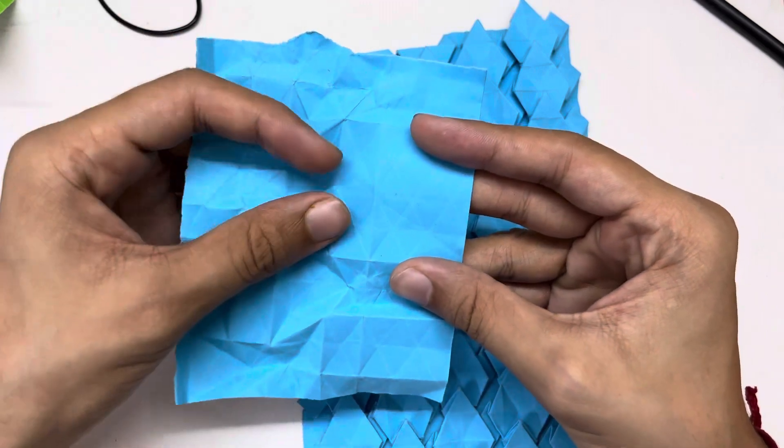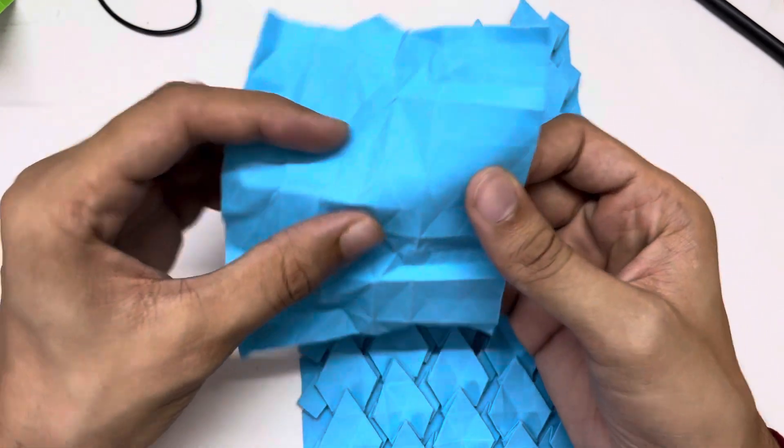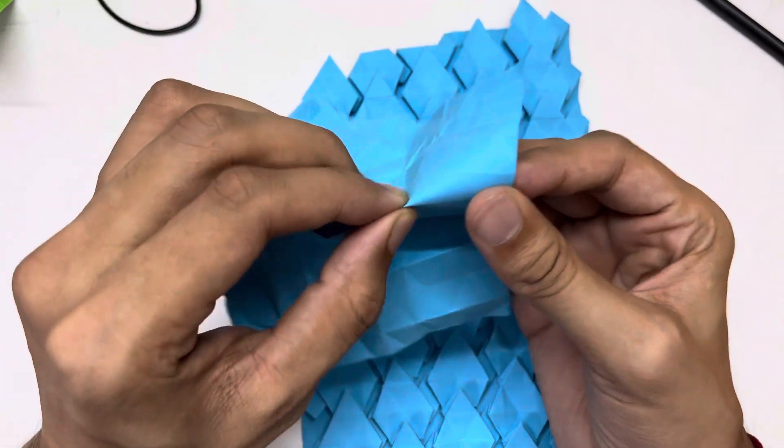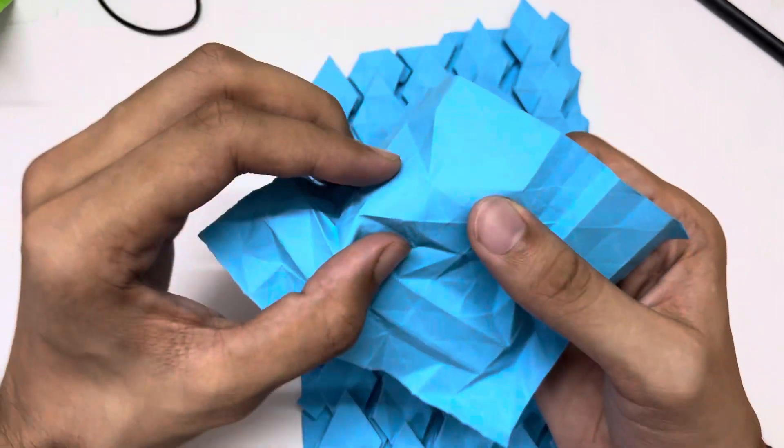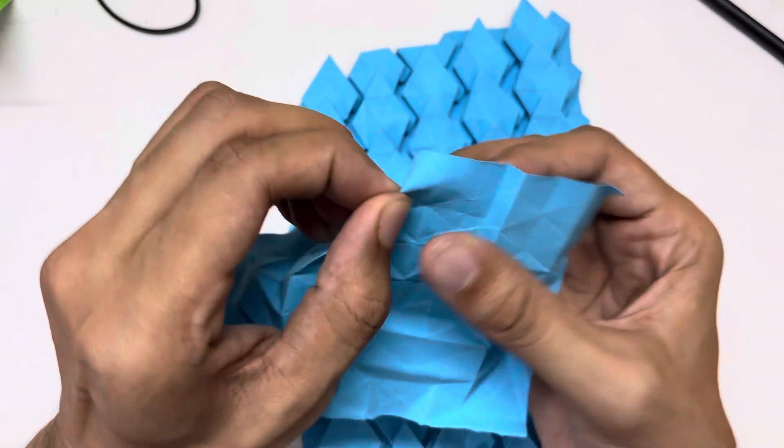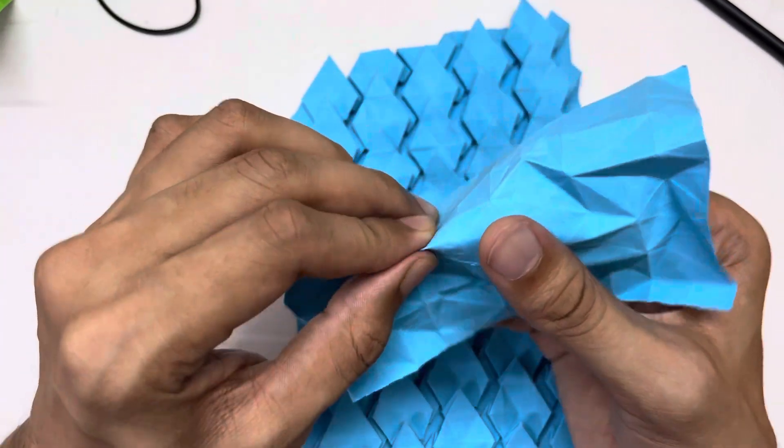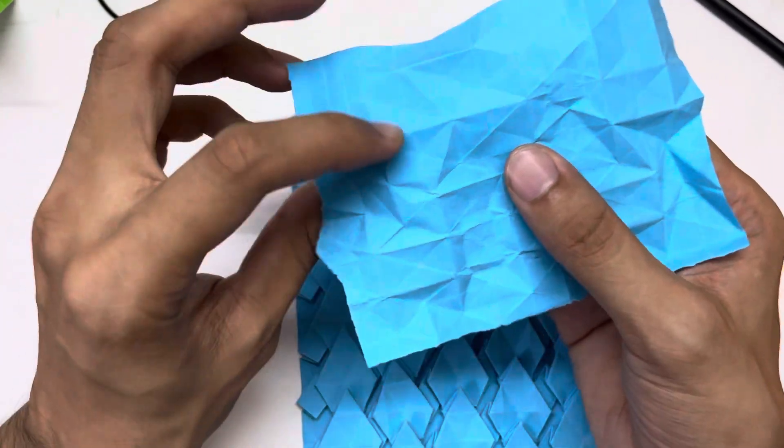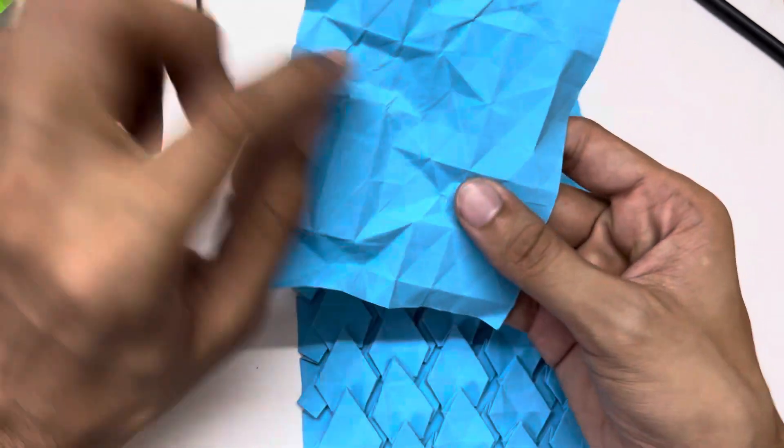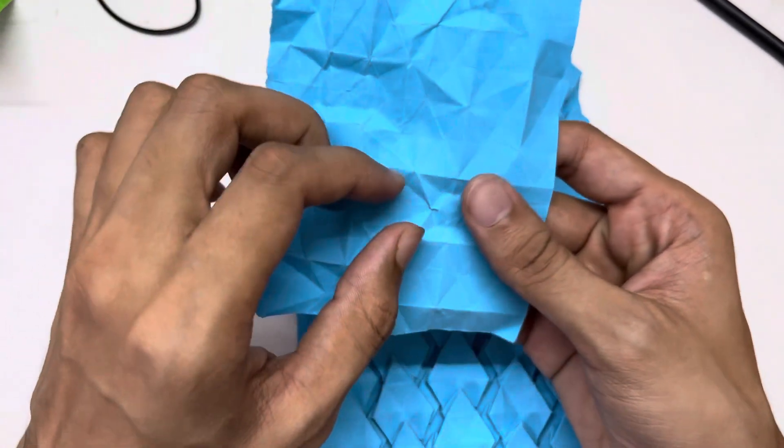So let's first make a triangular bow shaped structure to make our triangular pleat. Make this triangle and this triangle.